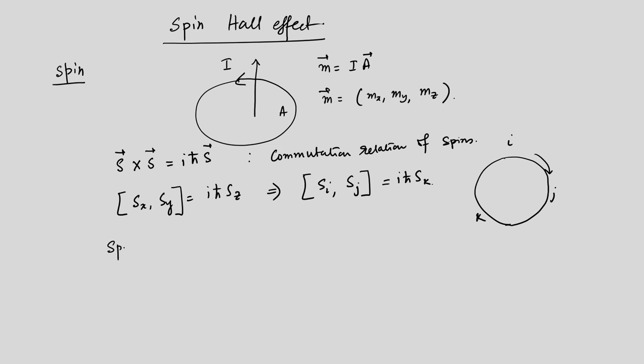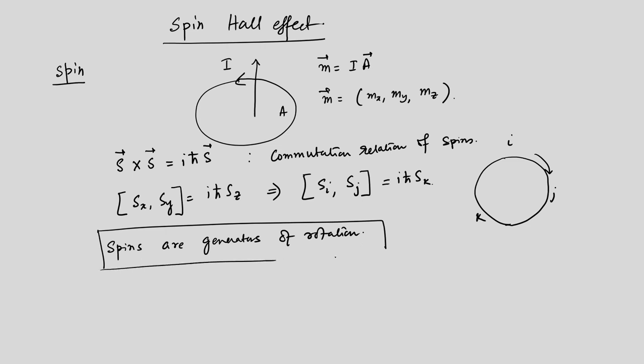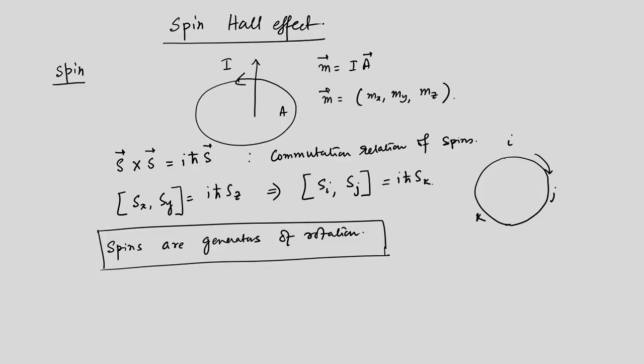Spins are also the generators of rotation, and rotation operators can be represented by the spin vectors. Just as finite rotations about different axes do not commute, this is directly related to the fact that the components of S do not commute with each other.